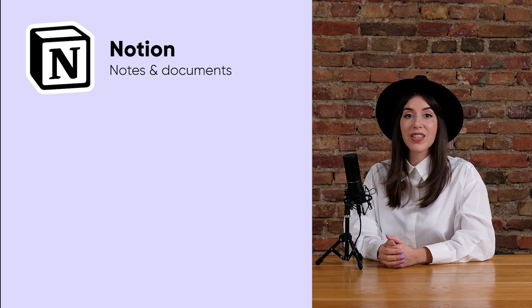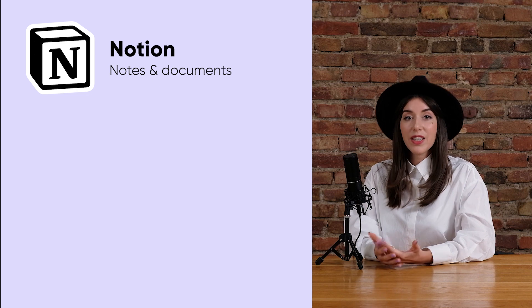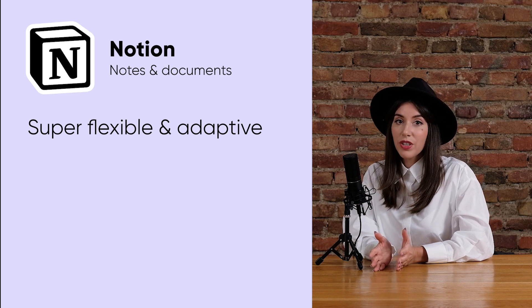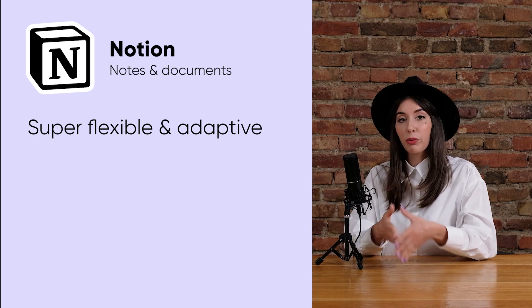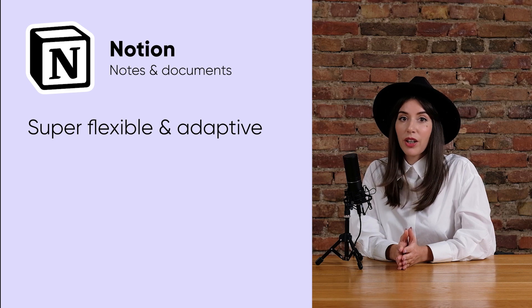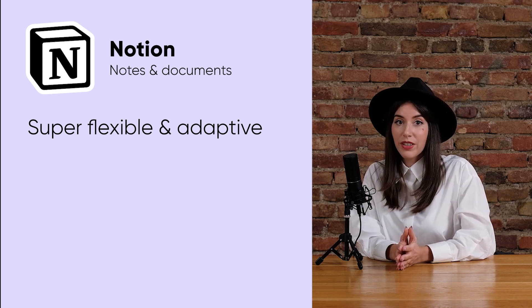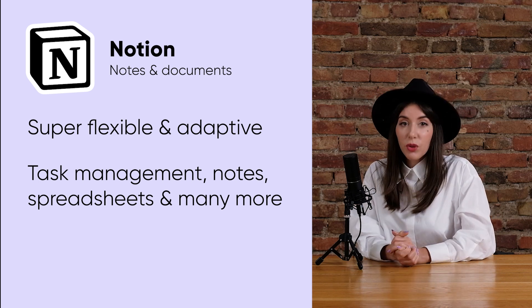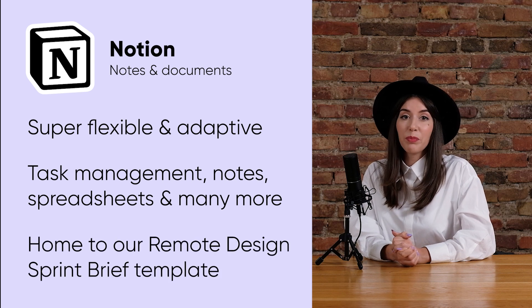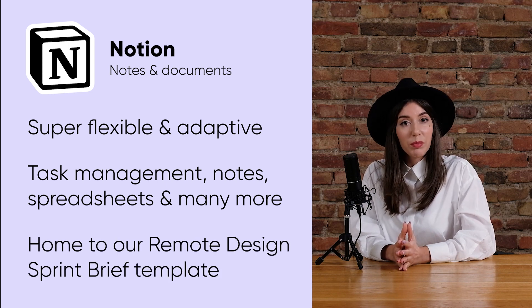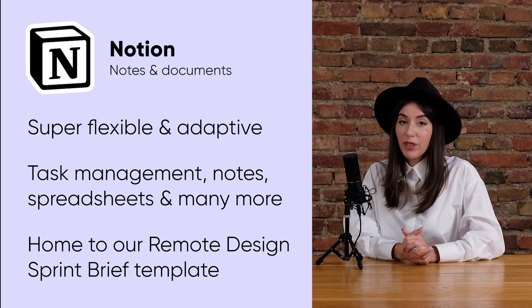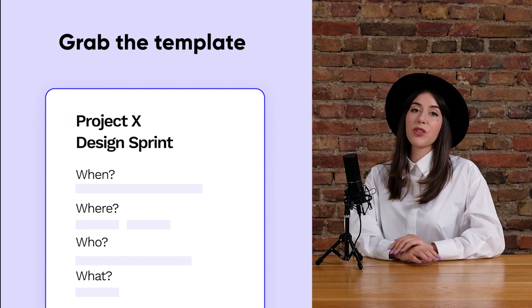Number two: Notion. We use Notion for almost everything even outside a design sprint — from task tracking to documenting projects and notes, it's super flexible. We love connecting and embedding Notion notes directly into Miro boards for quick access. It is an amazing tool to keep track of your progress and it has everything in one place: tasks, briefs, summaries, user testing reports — you name it. And of course there's a template. We have our own remote design sprint brief that is the core document that we send out to the sprint team before starting a workshop so that everyone has a common understanding of the challenge and logistics. You can get this resource in the video description below.